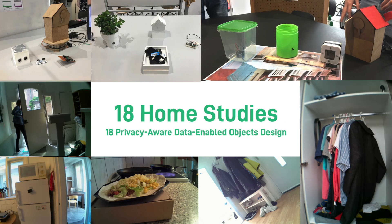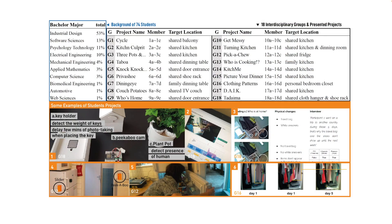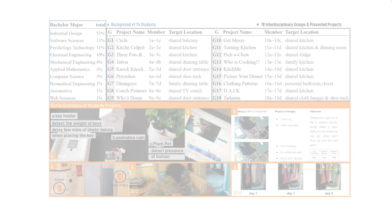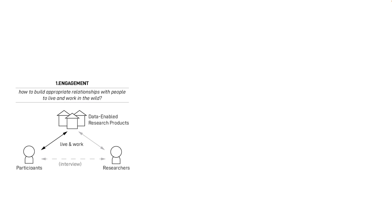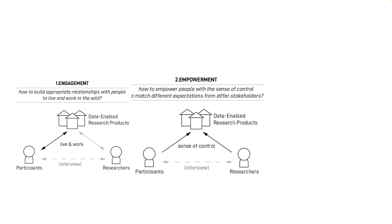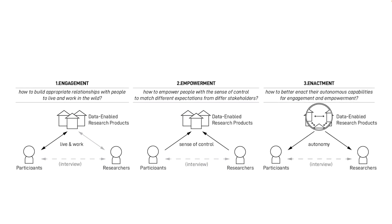With the CPT, we successfully enabled 18 different privacy-aware system designs across 18 different home contexts such as the balcony, kitchen, door entrance, and bedroom. We then explored how to design data-enabled objects that can engage in human activities to capture contextual data without intervening in human practice, how objects can provide stakeholders with the desired level of control, and how to make objects better enact their autonomous capabilities as context changes.